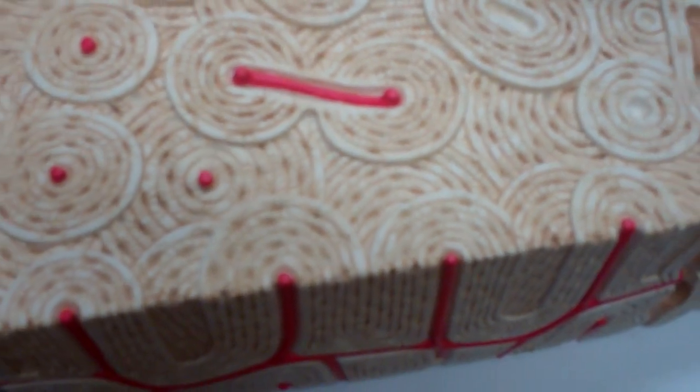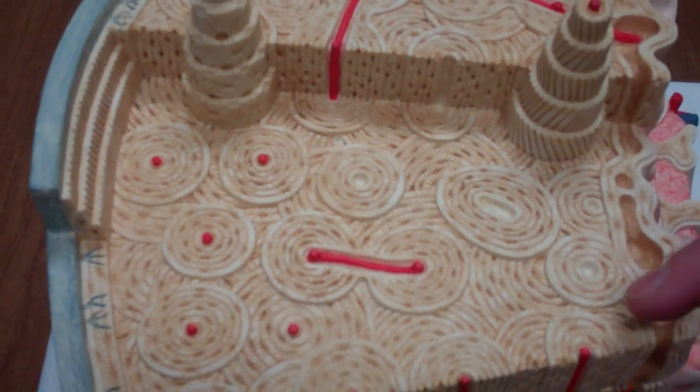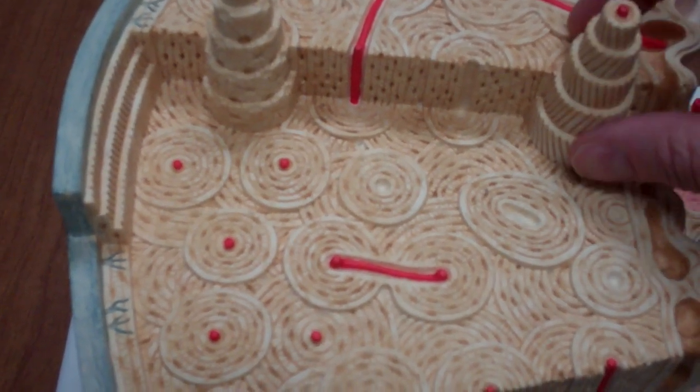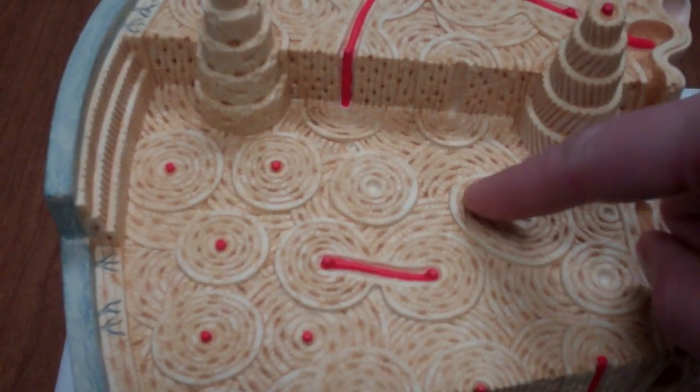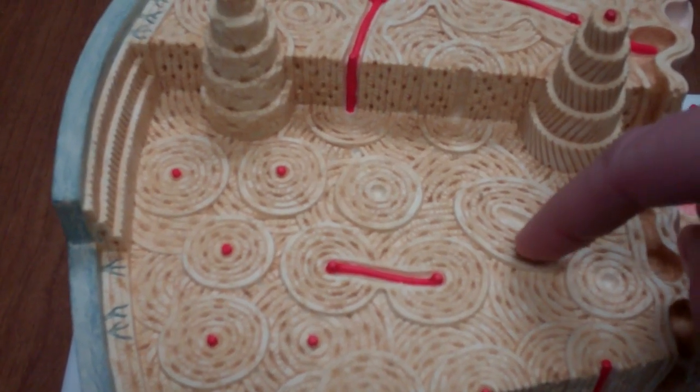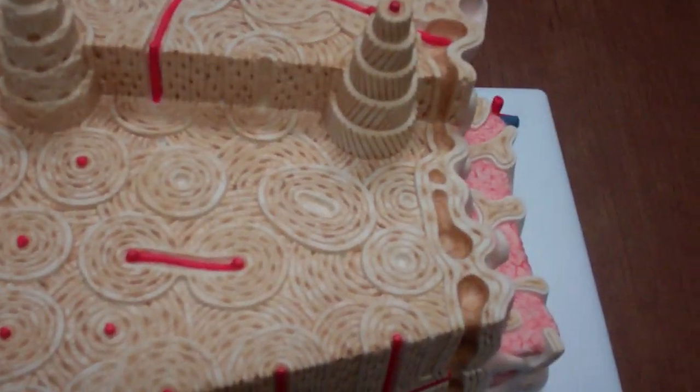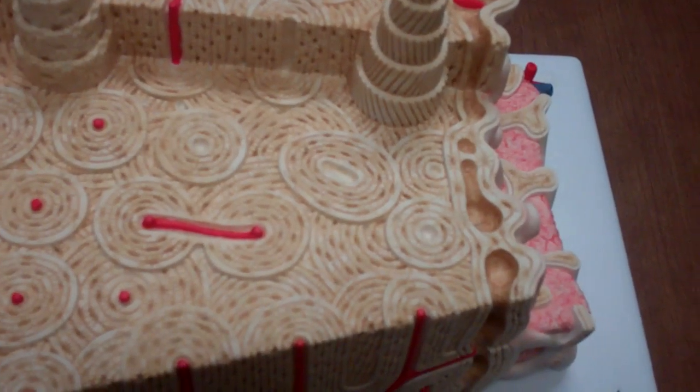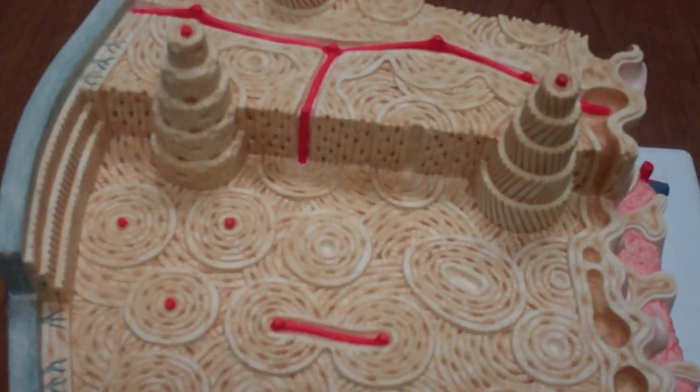All right, for our compact bone we are going to see the functional unit or these circular patterns of our extracellular solid matrix and then our cells trapped in between and this functional unit is known as our osteon. And in some ways it looks like a tree stump.